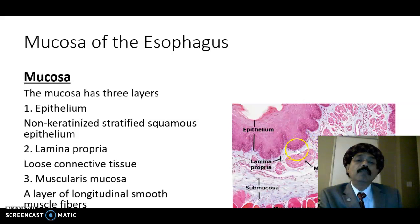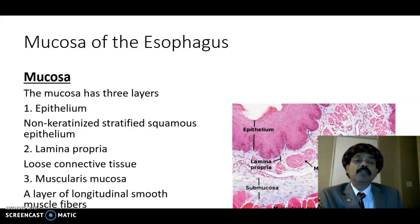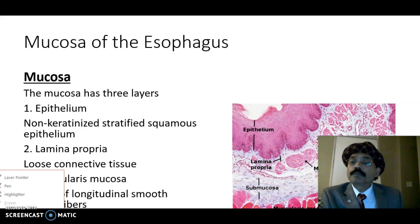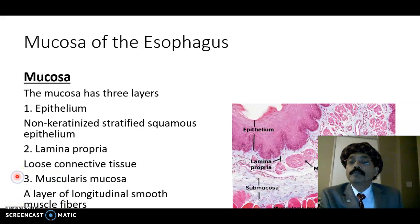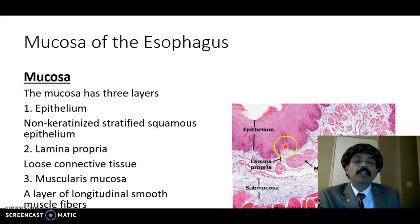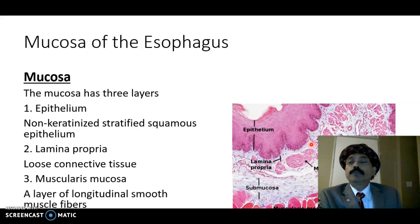Underneath the basement membrane we have the lamina propria, which is loose connective tissue. It makes papillae underneath the epithelium — these are called sub-epithelial papillae. We can see multiple sub-epithelial papillae here. Below that is the muscularis mucosa, and this region is the lamina propria — the loose connective tissue.